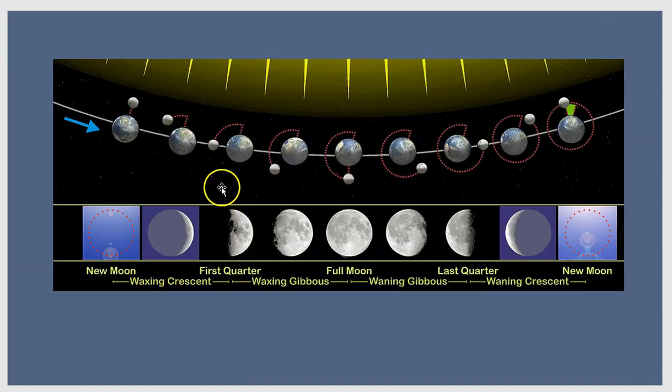Now, in this diagram, it will help us understand why we see different phases of the moon. Here we have the sun at the top of the picture. Here we have the orbit of the Earth, and then we have the moon in its orbit around the Earth.